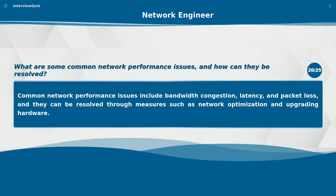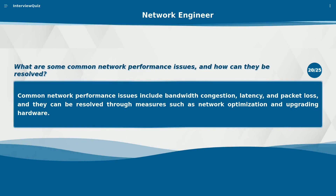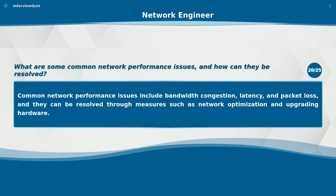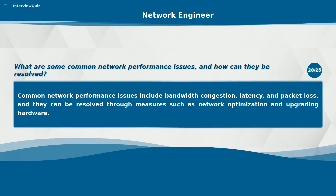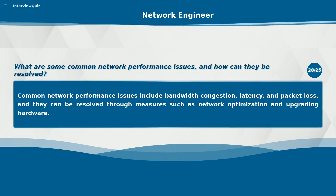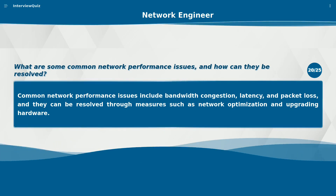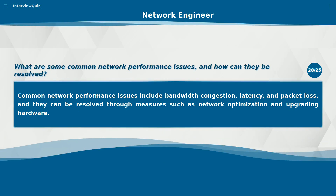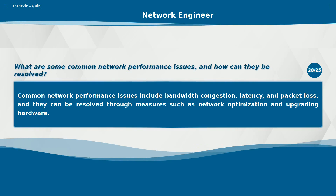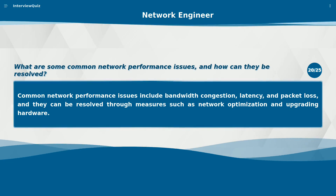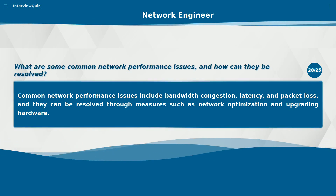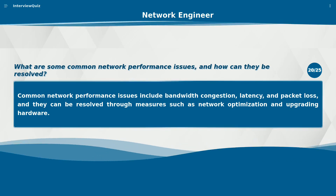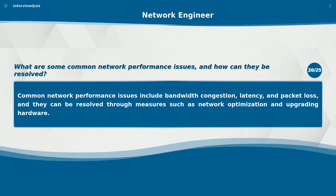What are some common network performance issues and how can they be resolved? Common network performance issues include bandwidth congestion, latency, and packet loss, and they can be resolved through measures such as network optimization and upgrading hardware.